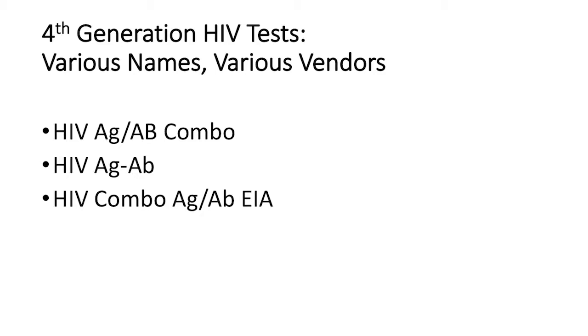Without mentioning brand names, the fourth generation test can be called different things. The CDC calls it fourth generation, but it may also appear as HIV antigen-antibody combo, HIV antigen-antibody, or HIV combo antigen-antibody EIA. The key is that you're seeing antigen and antibody in the name. When a new patient has a positive test, an important question is what kind of test was done — look to make sure the words antigen-antibody are in the name.